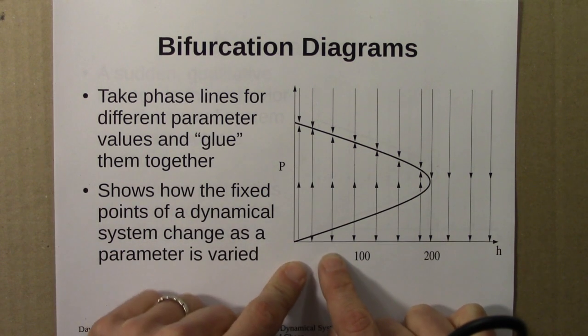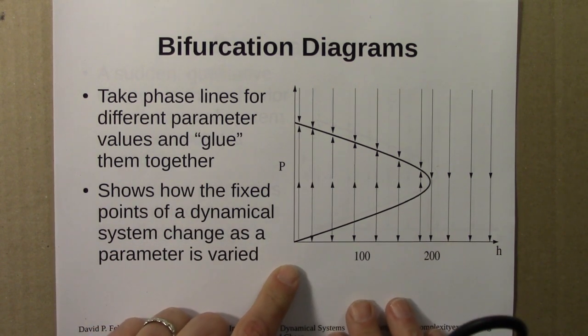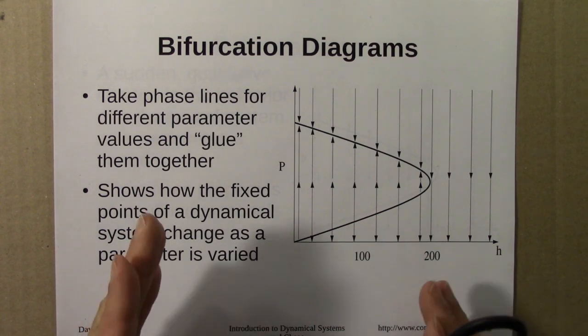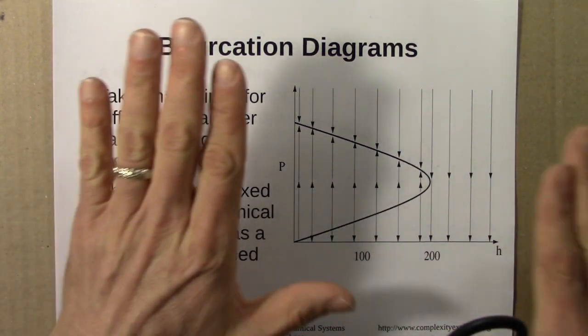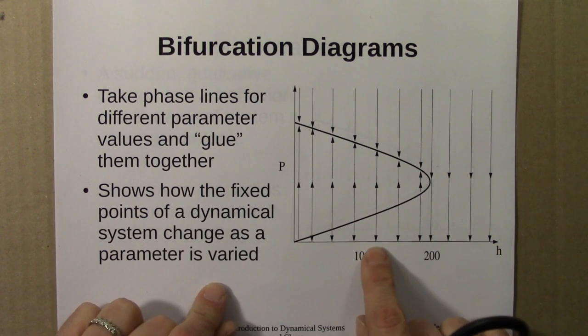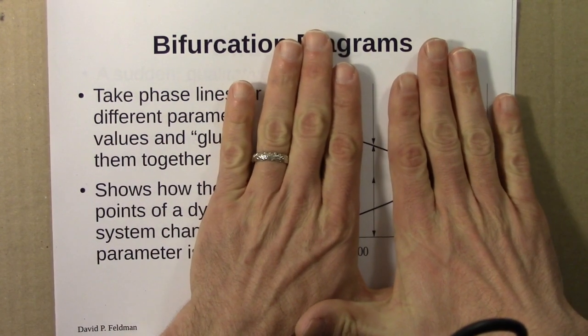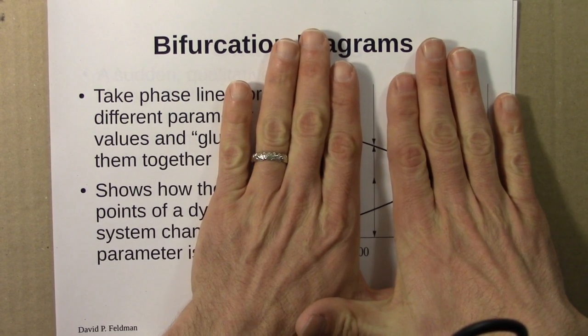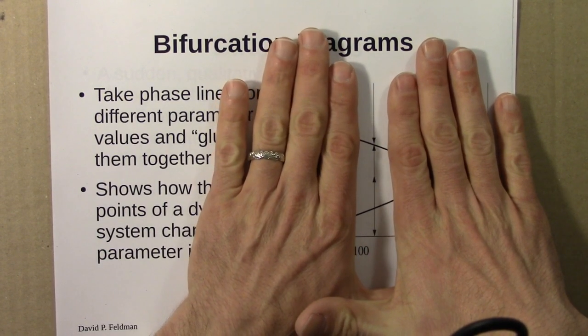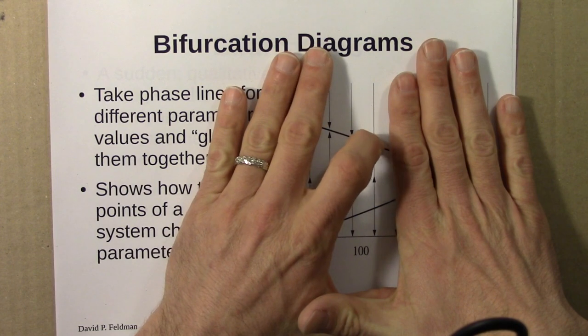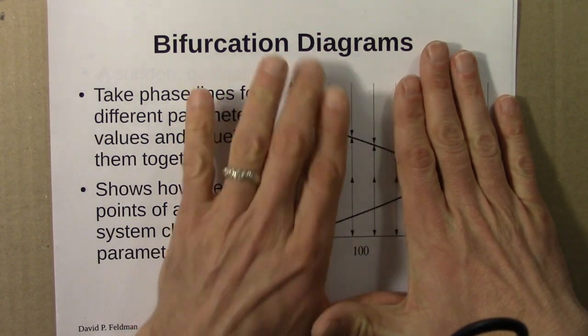The key is to remember that a bifurcation diagram is just a lot of phase lines stacked together. If we wanted to know what was going on for a little bit above 100 for this case, I would focus on that vertical slice and see a stable fixed point here and an unstable fixed point here.